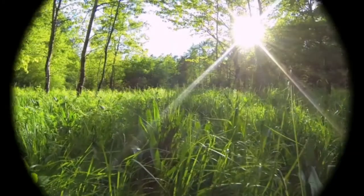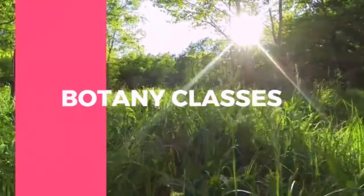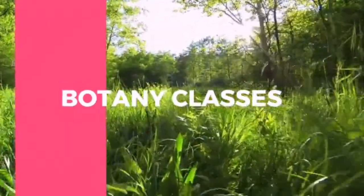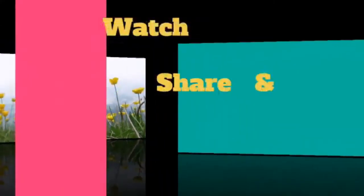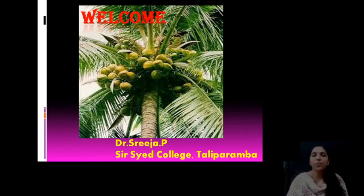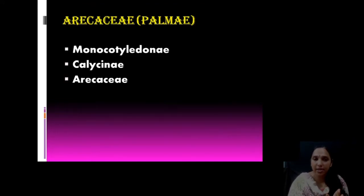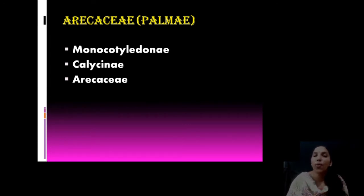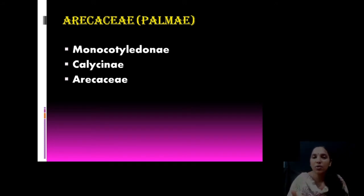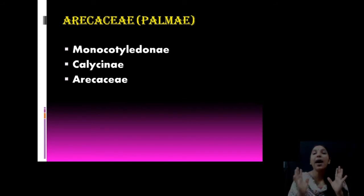Welcome to all. Today we are moving on to discuss the next family of monocotyledon, that is Arecaceae. Arecaceae is a well known family and it is also known as Palmae. By looking into the term, you can see it is familiar to you — Palms. Palms are our common plants occurring all around. Kerala is well known for coconuts — coconut palm, areca nut palm, date palm. All these palms belong to the family Arecaceae.